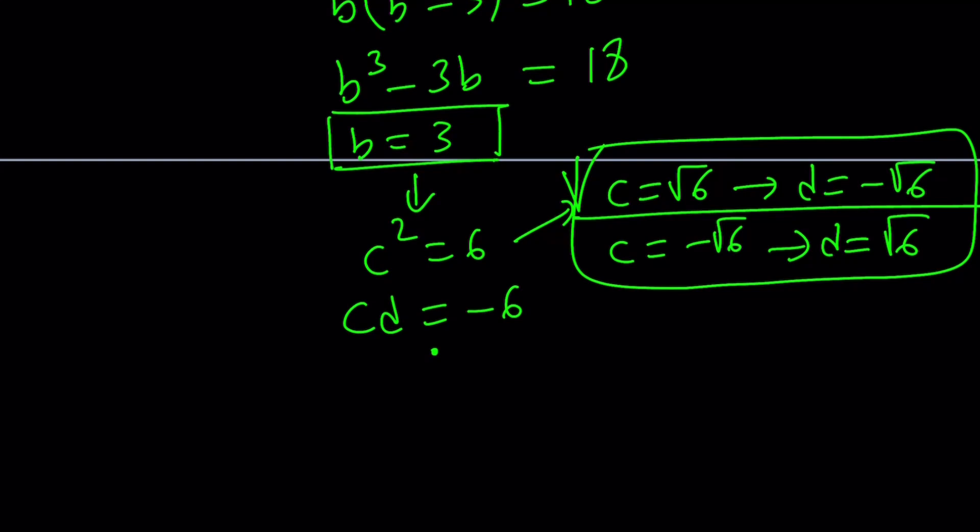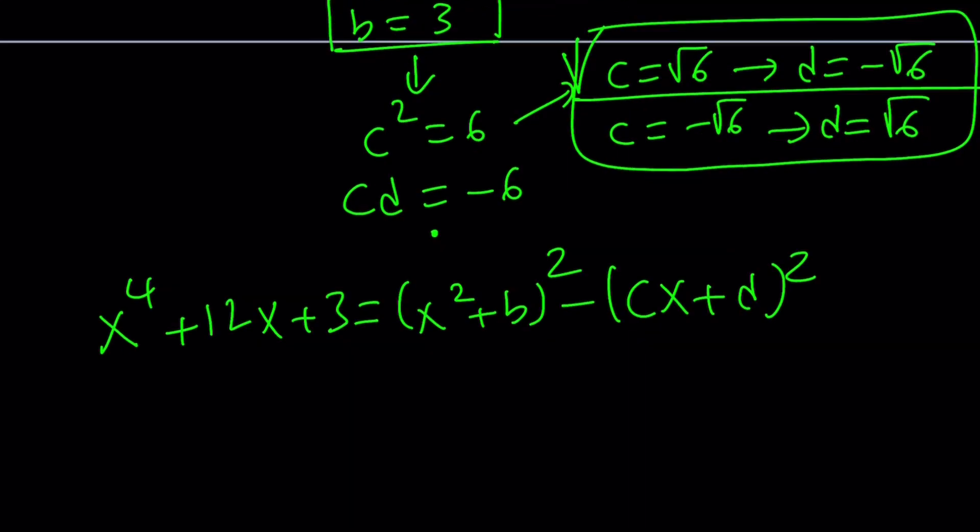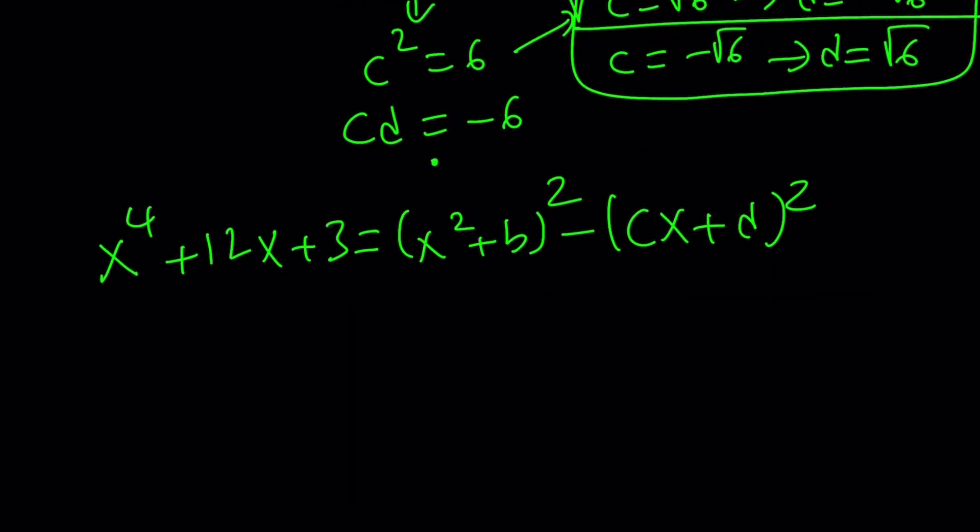Remember, our equation was as follows: x to the 4th plus 12x plus 3 is equal to x squared plus b squared minus cx plus d squared. Now we know the values of b, c, d, so we can plug it in. x squared plus 3, b is 3, minus...